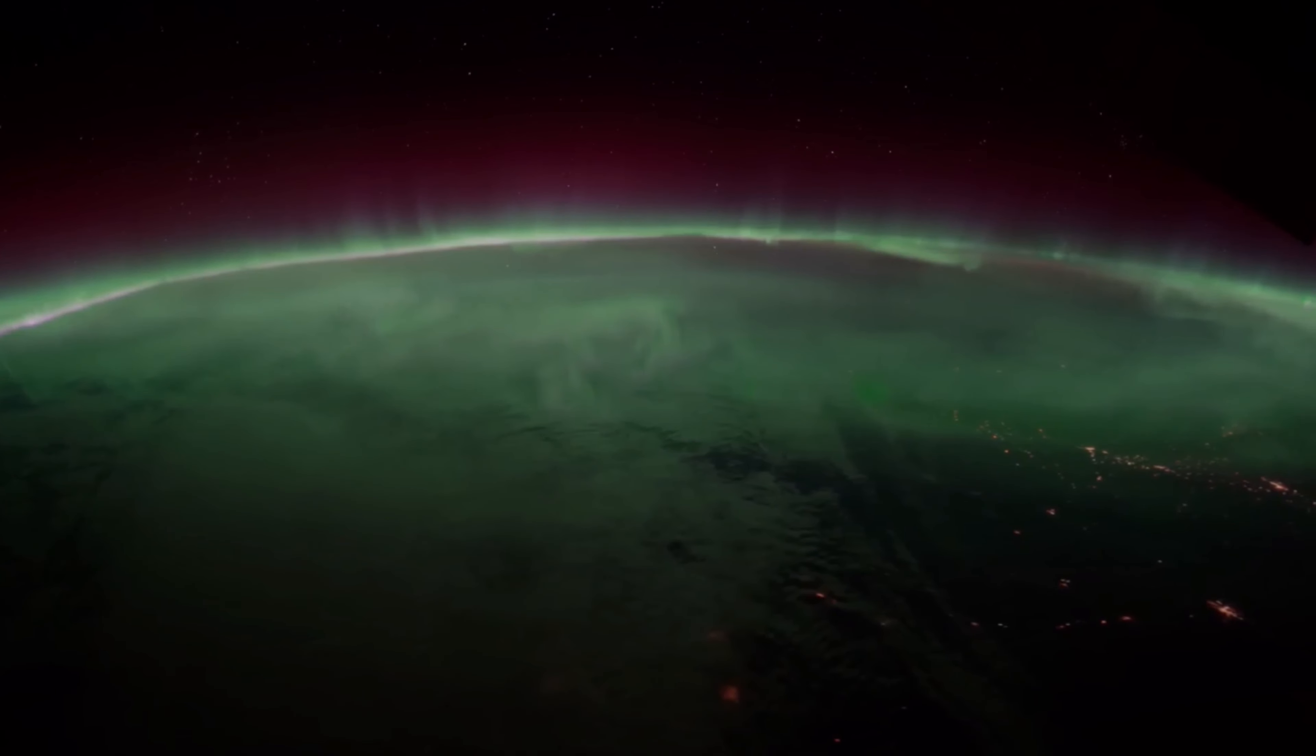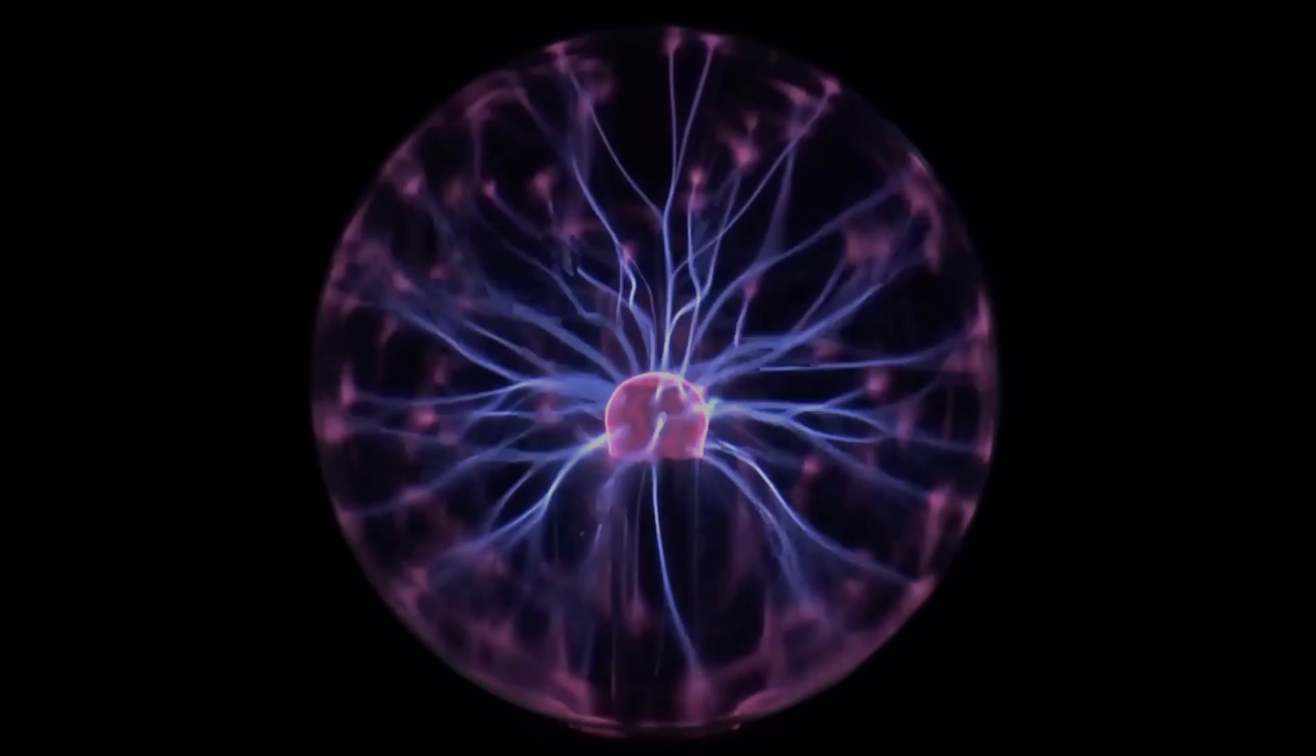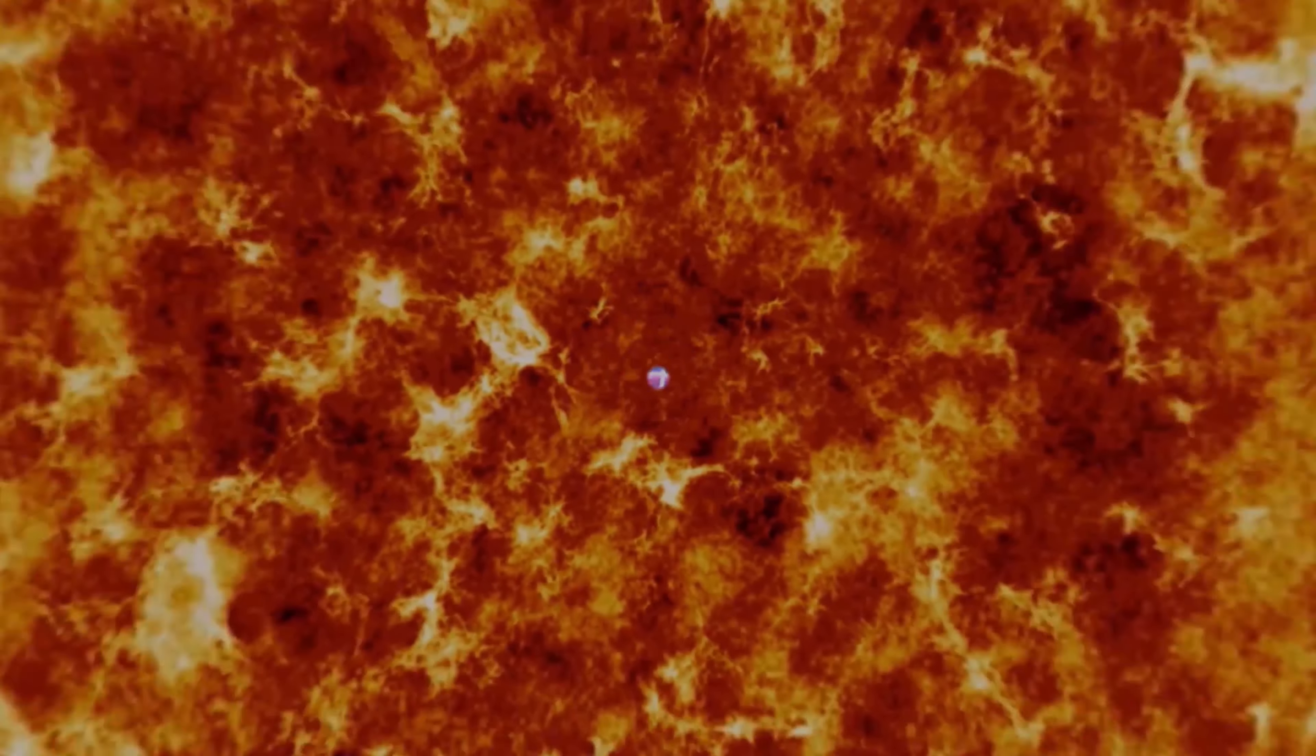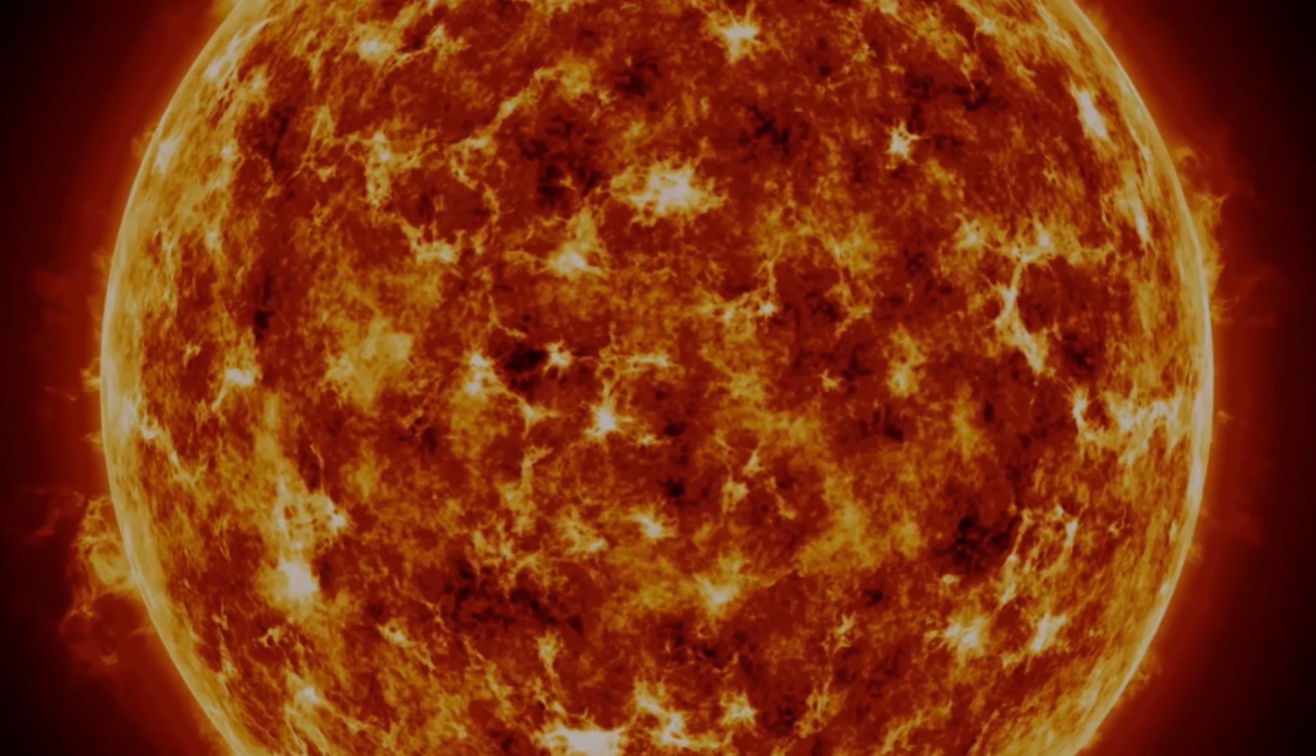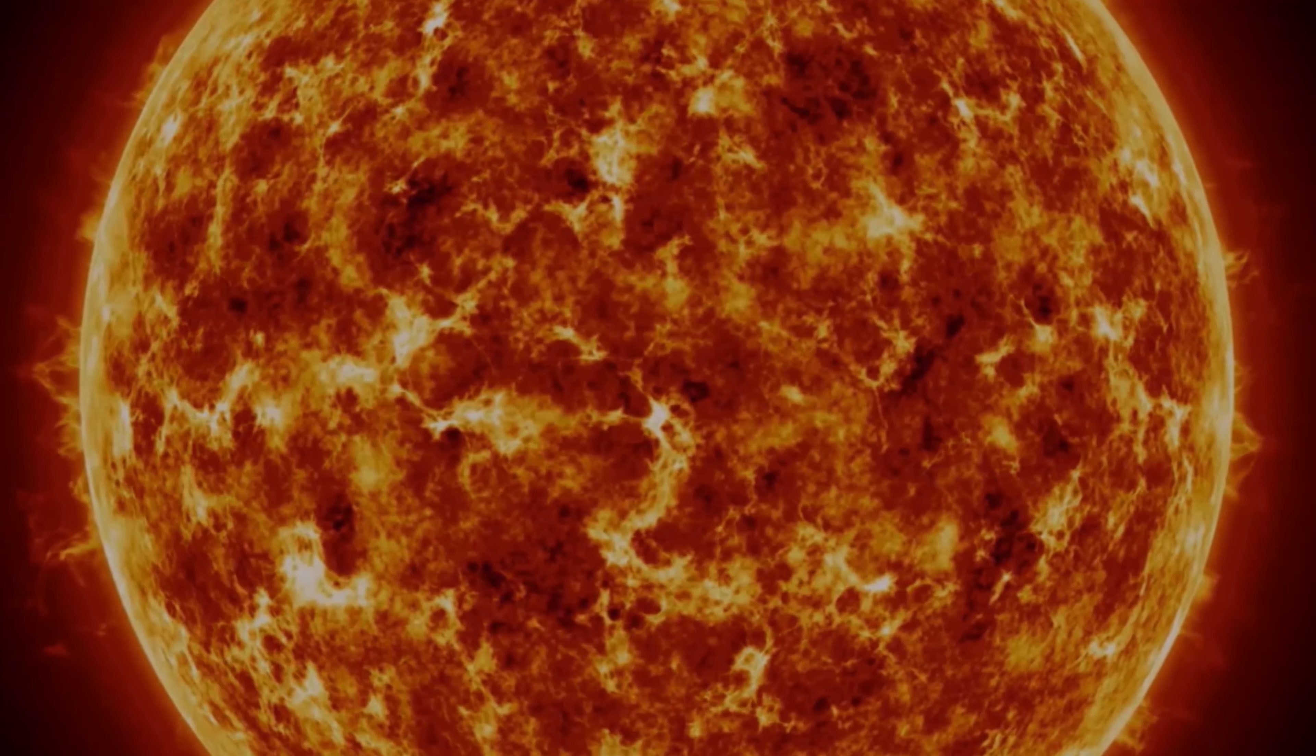The plasma state occurs naturally on Earth in parts of the atmosphere and during lightning. Plasma globes, neon signs and plasma TVs make use of the plasma state. Stars are huge balls of plasma. It's estimated that plasma makes up 99.99% of the matter in the universe.